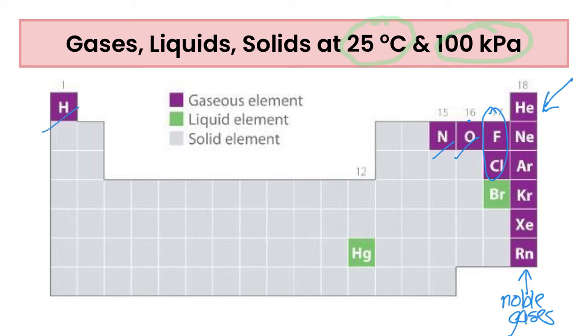Now I do want to point out that there are also only two liquids at room temperature and 100 kPa, so that's bromine found in the liquid state at room temperature as well as mercury. Any other element on the periodic table is actually found as a solid at 25 degrees Celsius and 100 kPa, so that's worthwhile noting as well.